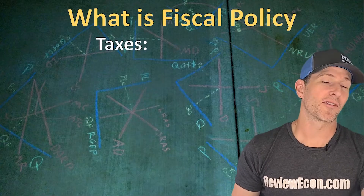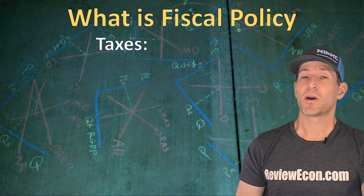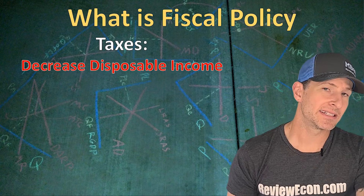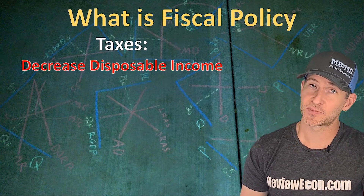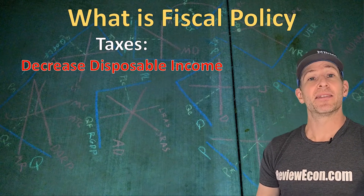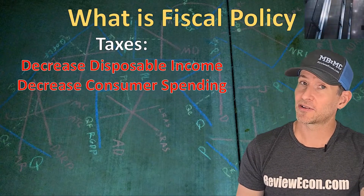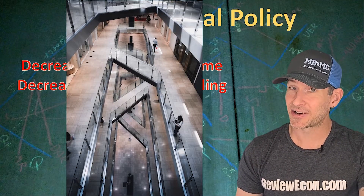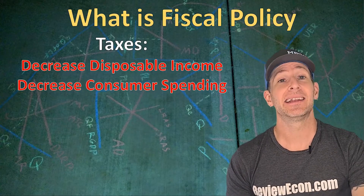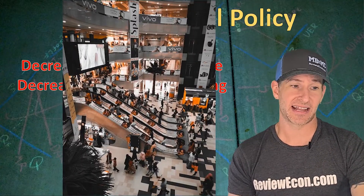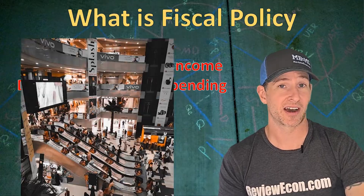Taxes are the first fiscal policy tool we're going to talk about. When we increase taxes, that is going to decrease disposable income. And when there's less disposable income, that's going to decrease consumer spending. So increases in taxes decrease consumer spending within the economy, and decreases in taxes will increase consumer spending within the economy.